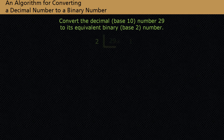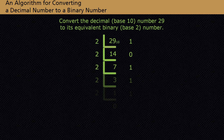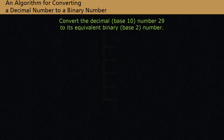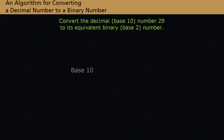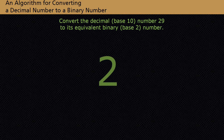Let's examine an algorithm for converting a decimal number to a binary number. Convert the decimal base 10 number 29 to its equivalent binary, or base 2, number. The algorithm involves repeated divisions. Since we are converting from a decimal number to a binary number, we will do repeated divisions by 2.